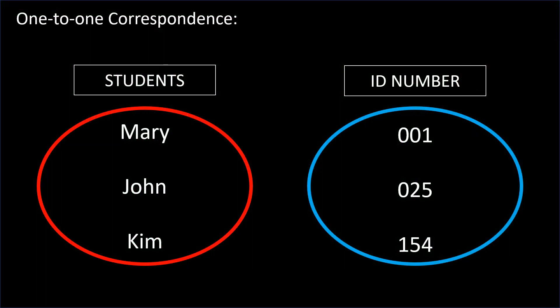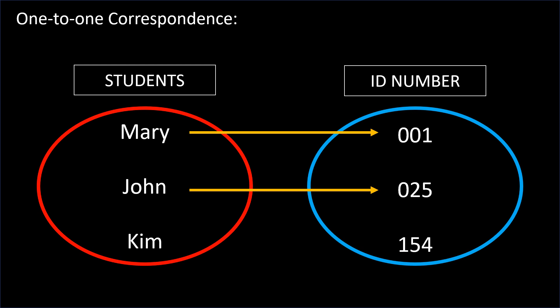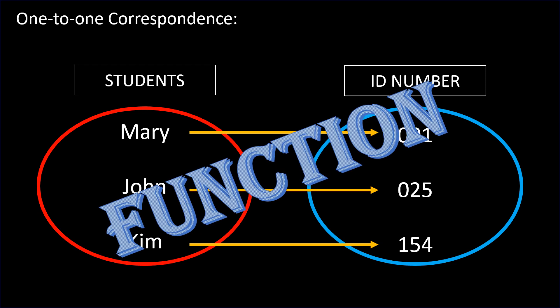This is an example of one-to-one correspondence: the relationship of students and their ID numbers. The first diagram has students Mary, John, and Kim. Mary's ID number is 001, John's is 025, and Kim's is 154. Each student has a unique ID number. Therefore, this is a function.